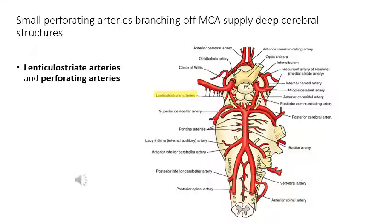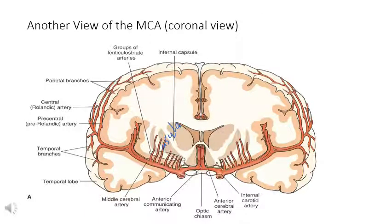There are some small branches from the middle cerebral artery — the lenticular striate artery and the perforating artery — which supply the deep cerebral structures. Another picture shows the anterior artery from the middle cerebral artery, which goes to the basal ganglia, the internal capsule, and the insula.